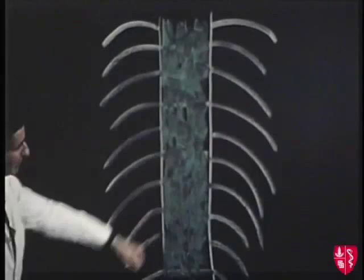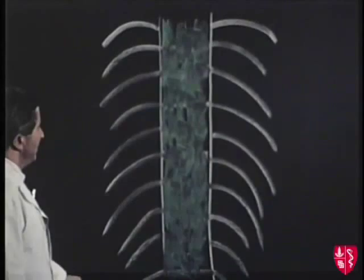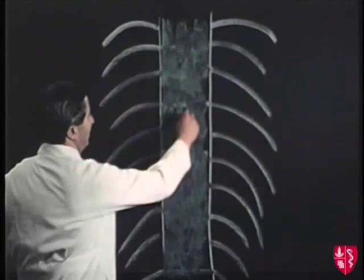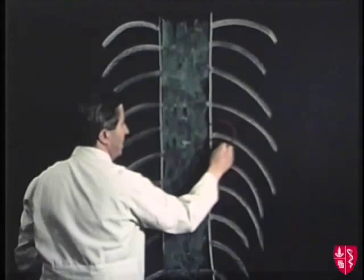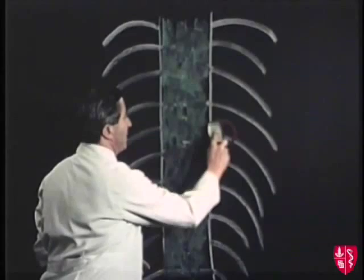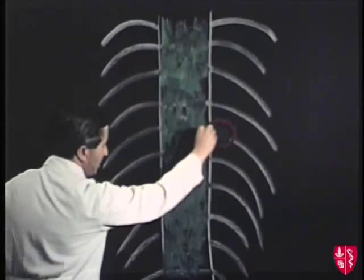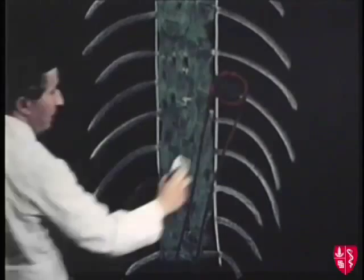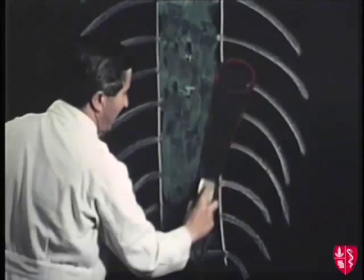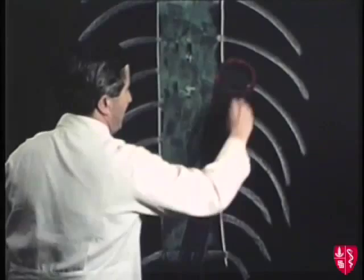The descending thoracic aorta begins at about the level of the disc between the fourth and fifth thoracic vertebrae. From this point downwards, the descending thoracic aorta will gradually migrate towards the midline, eventually reaching the midline and passing through — or rather behind — the diaphragm at the level of the 12th thoracic vertebra. This large artery will give rise to the intercostal arteries, that is the intercostal arteries below the second, coming down in the intercostal space in the way indicated previously.